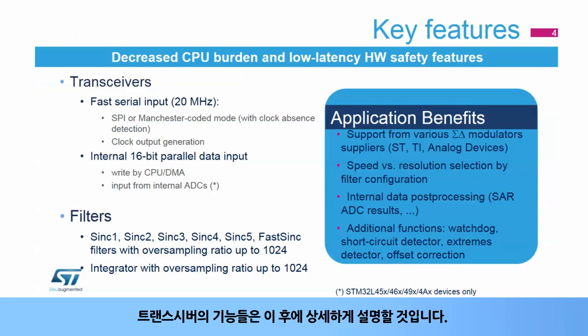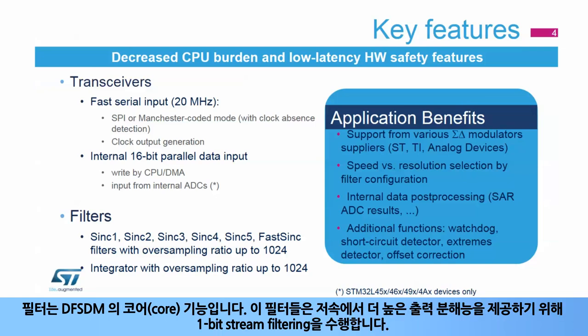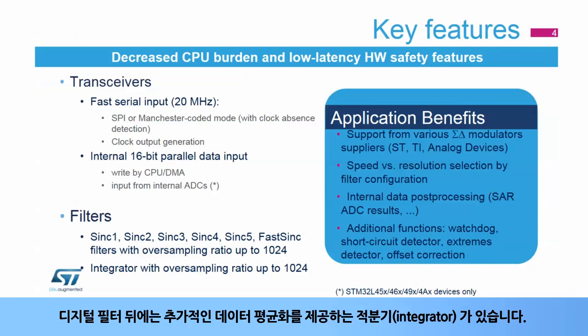Transceivers also have support for internal 16-bit parallel data inputs, which will be written to the DF-SDM input data registers by the CPU or DMA, and optionally by the internal ADCs for STM32 L45X, 46X, 49X, and 4AX devices only. Filters are the core of the DF-SDM function. They perform 1-bit stream filtering to provide higher output resolution at lower speeds. There is an additional integrator behind the digital filter, which provides additional data averaging.